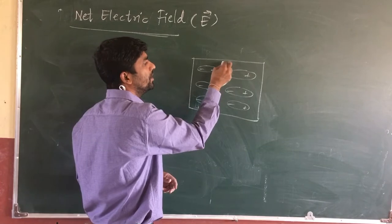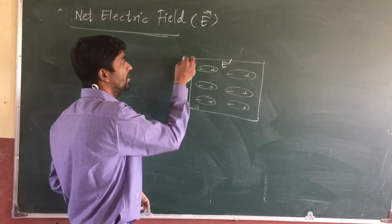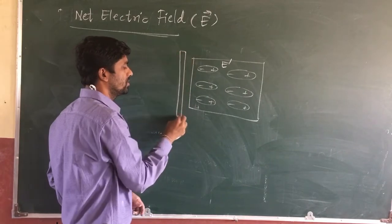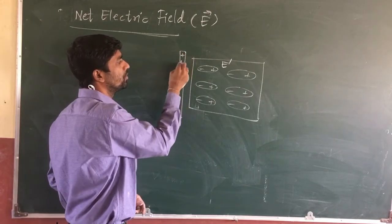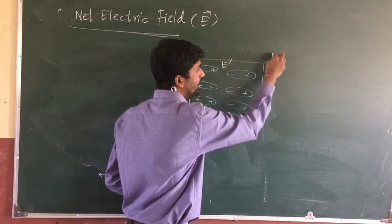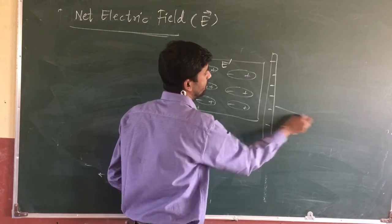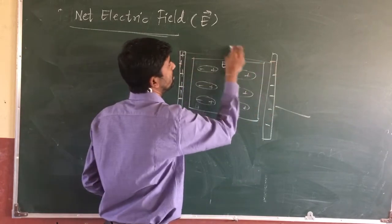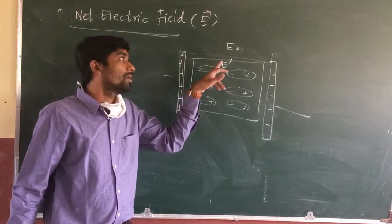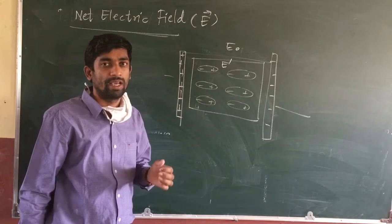What is the electric field here? The electric field inside the dielectric is E dash. What is the external electric field? Suppose this is your positive plate and this one is your negative plate, and this is your external electric field E naught. But what happens? This electric field and this electric field are both in opposite directions.